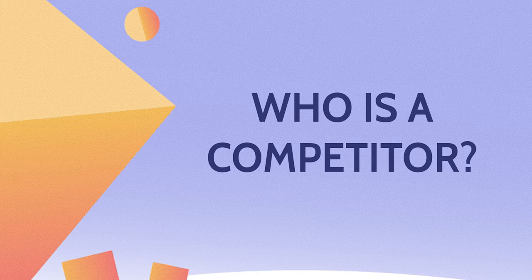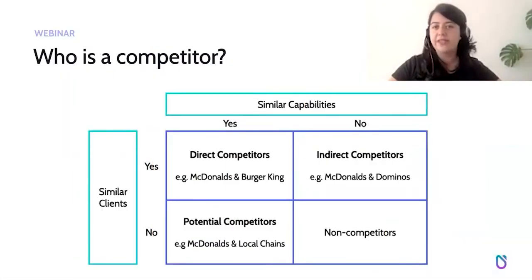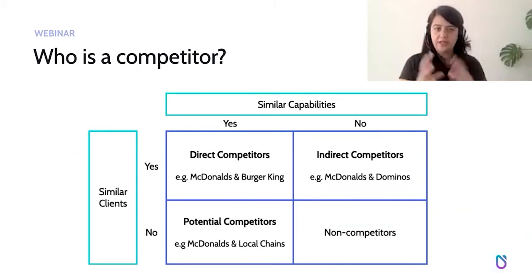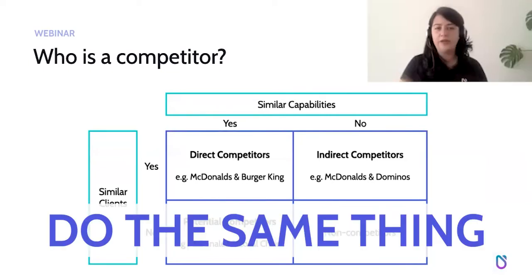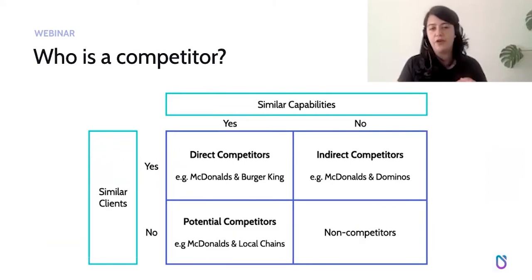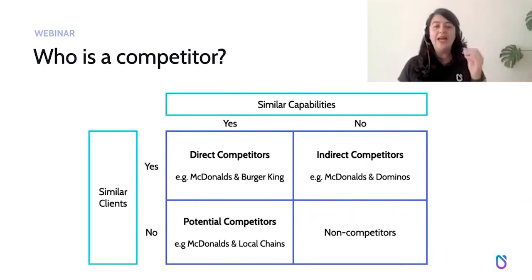Who is a competitor? Not all companies are competitors — not all companies that offer something similar should be considered direct competitors. When analyzing our competitors, we can use a matrix, putting on one side the type of audience these companies have and on the other the capabilities in terms of financial and human resources. Direct competitors do exactly the same thing — similar business model, similar audience. McDonald's and Burger King are a classic example: they're direct competitors because they do exactly the same thing and share the same audience.